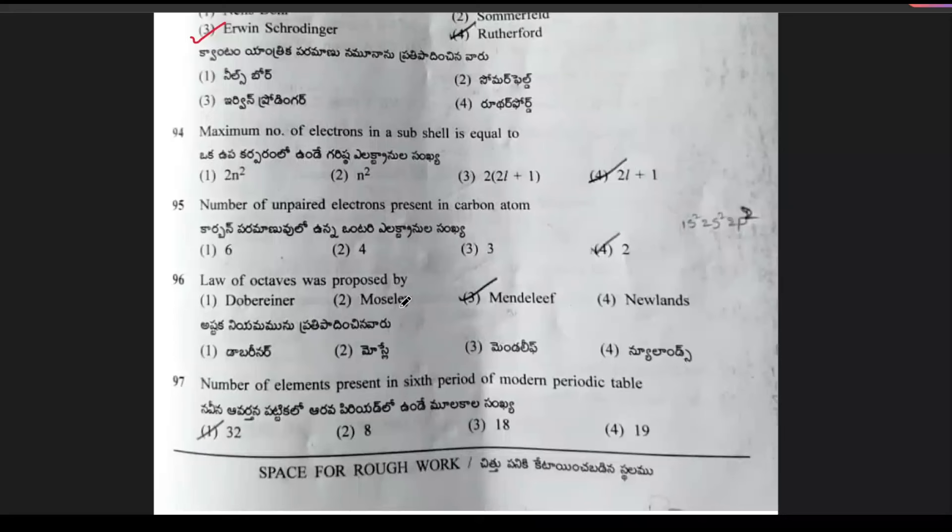94th question: maximum number of electrons in a subshell is equal to? Options are 2n², n², 2l+1, and 2(2l+1). Option 4, 2(2l+1), is the right answer. Next, number of unpaired electrons present in a carbon atom. Options are 6, 4, 3, and 2. Option 2 is the right answer.